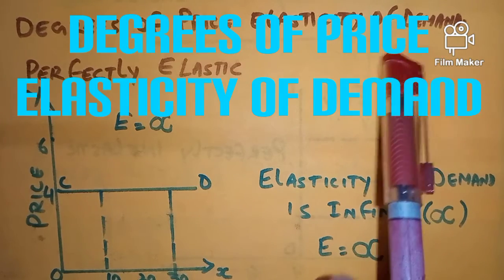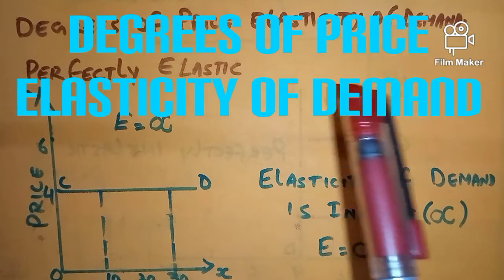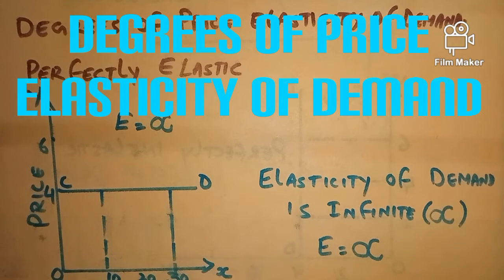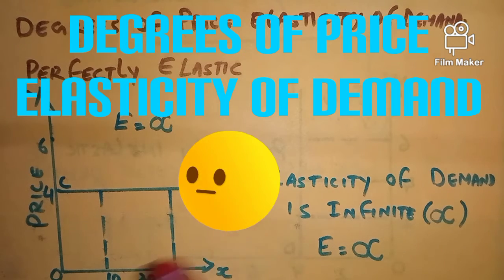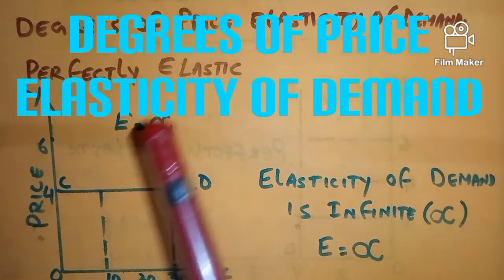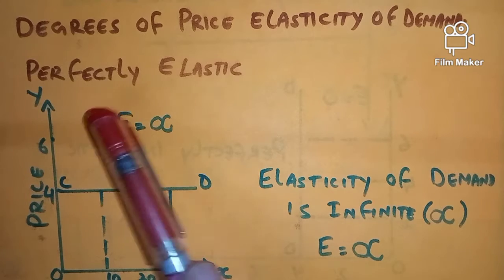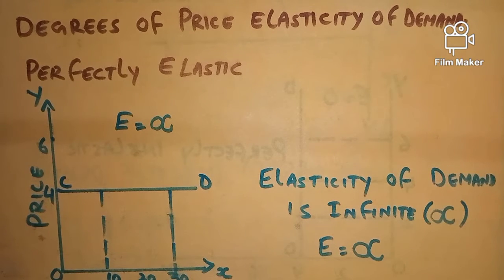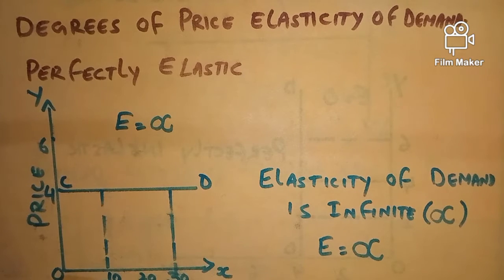Now we'll discuss the degrees of price elasticity of demand. There are five degrees in economics, depending upon the change in price. Number one is perfectly elastic demand. Perfectly elastic demand is a situation where the slightest rise in price causes the quantity demanded of the commodity to fall to zero.